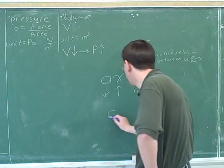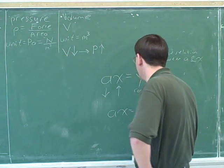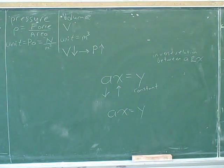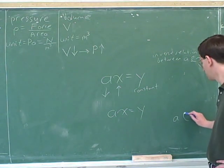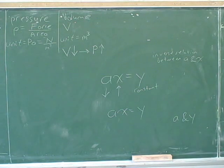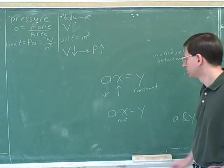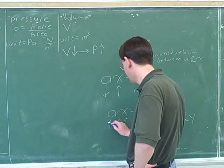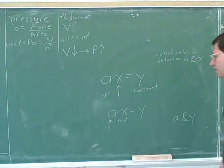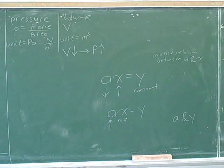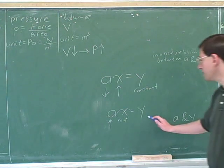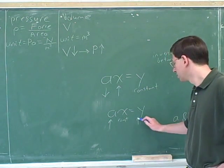You see many different equations, and whenever you see the equation, it's very important to be able to tell from that whether it means a direct or an inverse relationship. Well, this means an inverse relationship between A and X. How about between A and Y? Do A and Y here have a direct or an inverse relationship?